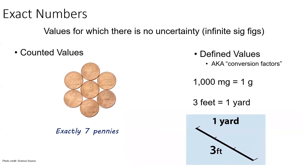Now, there are two instances where numbers contain absolutely no uncertainty. That is, they have infinite significant figures. These are counted values, like for instance, this is exactly seven pennies, as well as precisely defined values such as the conversion between milligrams and grams or the fact that there are always exactly three feet in one yard.